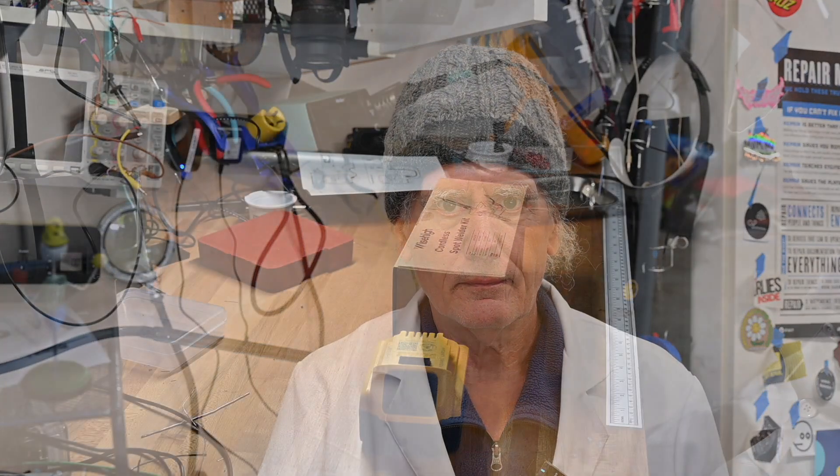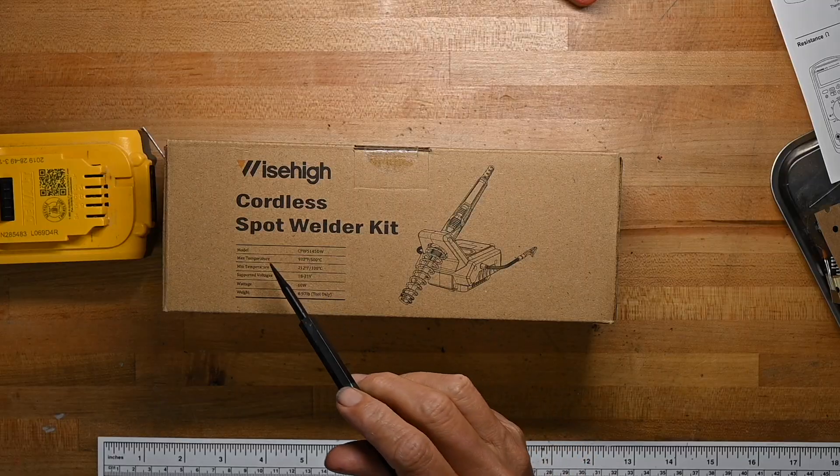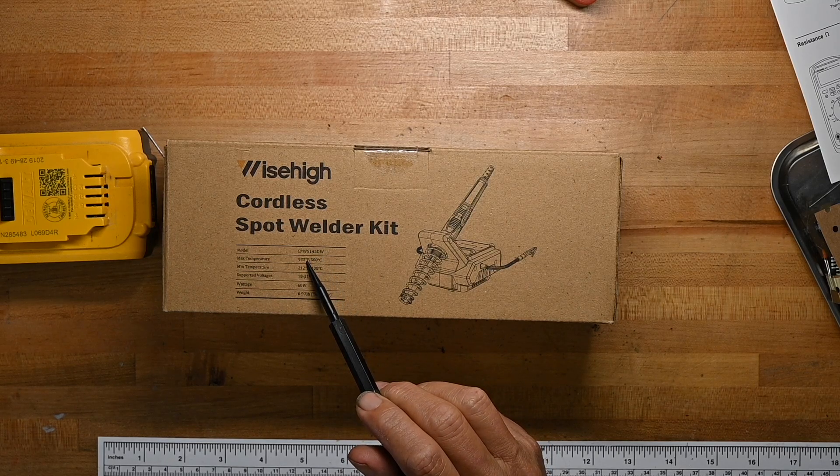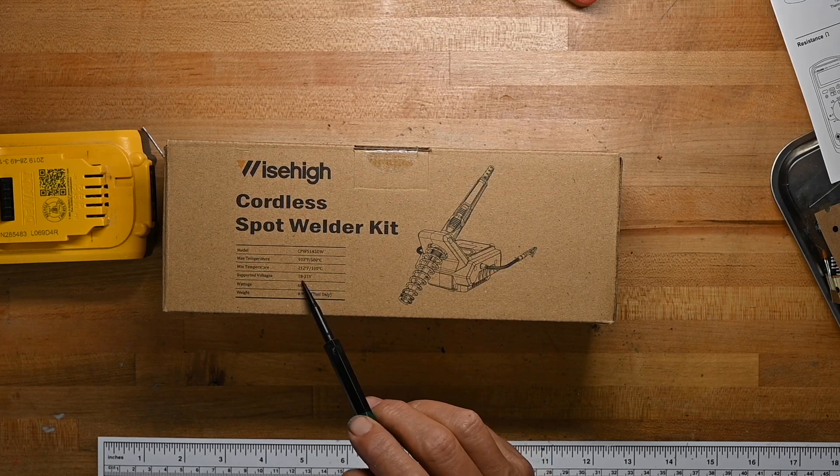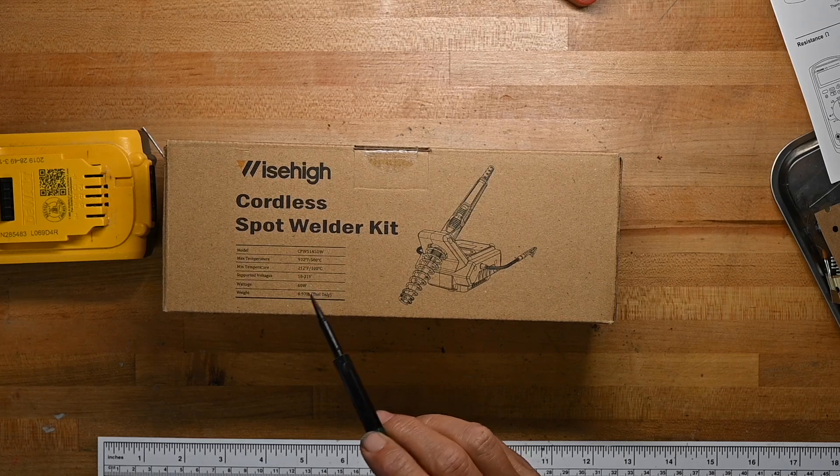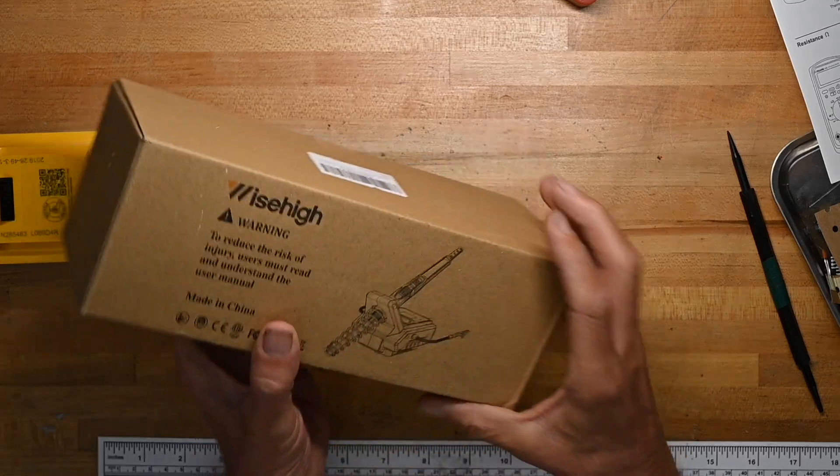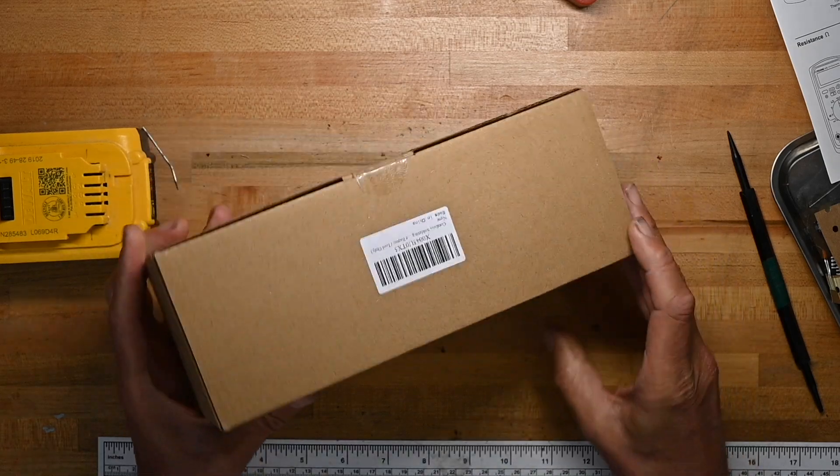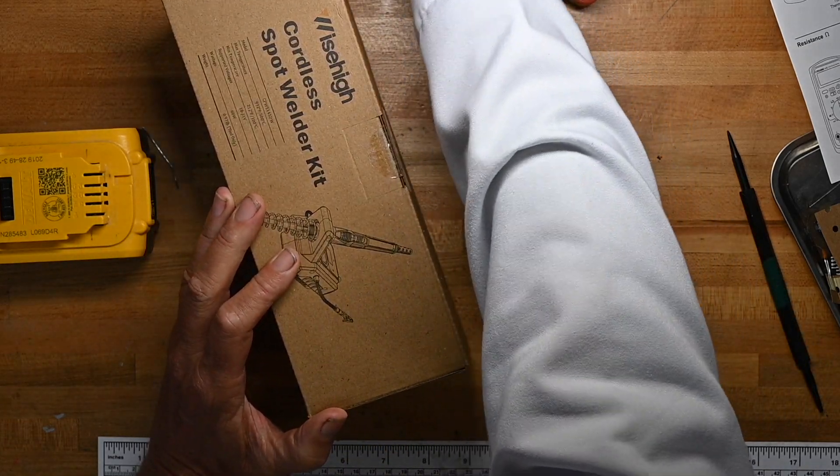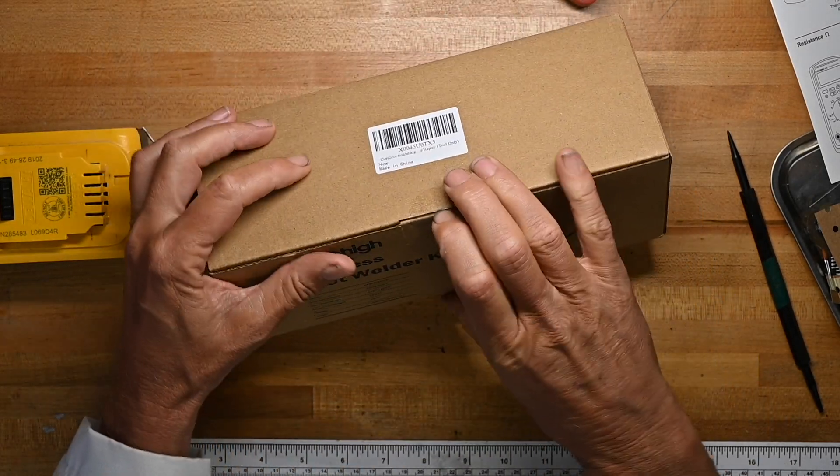Here's the box. Wise High cordless spot welder kit. Max temperature 932 Fahrenheit 500 C. Min temperature 212 Fahrenheit 100 C. Voltage is 18 to 21 volts, 60 watts. Weight is a little less than a pound. To reduce the risk of injury read the manual. Let's get it open.